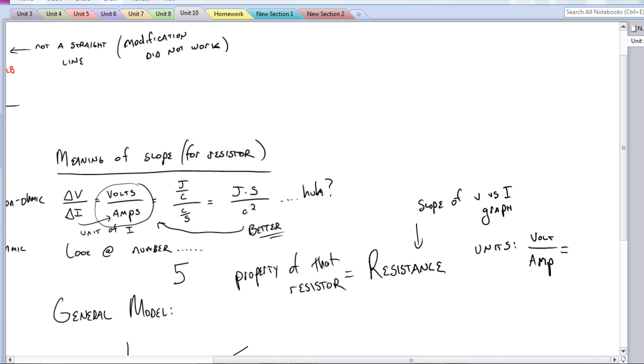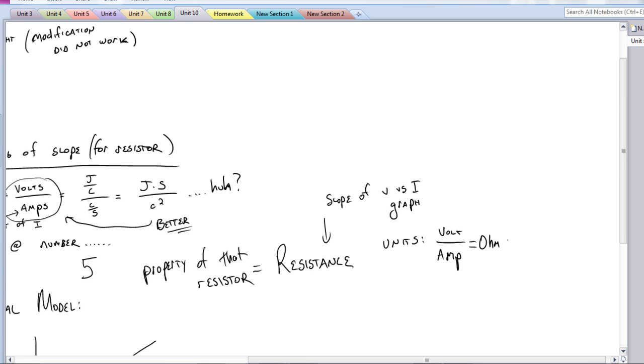And the units for this, we saw it was a volt per amp. Remember that an amp is how we measure current. And if you want to simplify this, this is actually simplified down to what we call an ohm, which can be written as the Greek letter omega. You will see it written like this. You might also see it written just like that. It is not an oh, it is an omega.